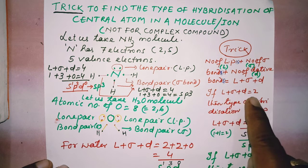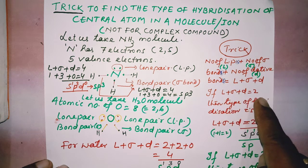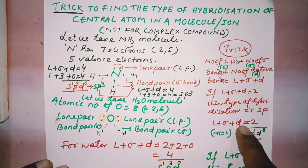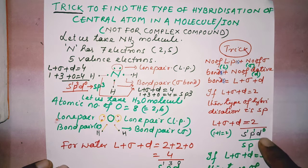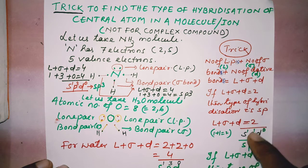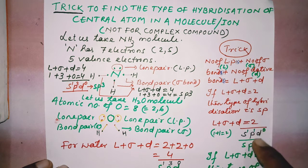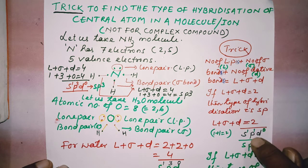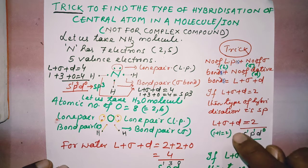If L plus sigma plus D equals 2, then the type of hybridization is SP. Out of these 2 hybrid orbitals, S takes 1 and P takes 1 (since 2 minus 1 equals 1). So D takes 0, giving SP hybridization.